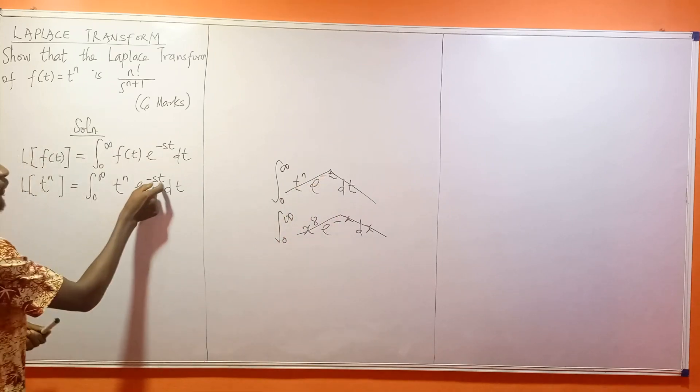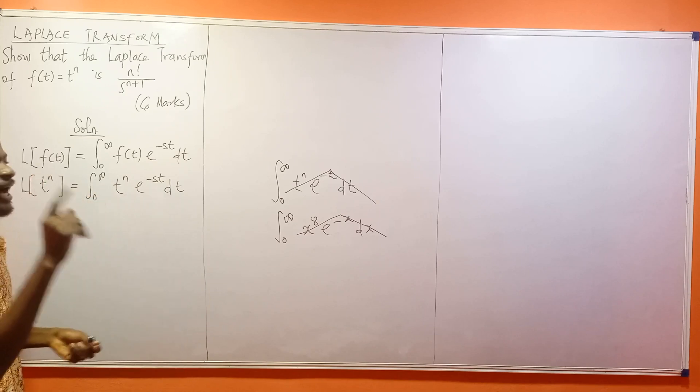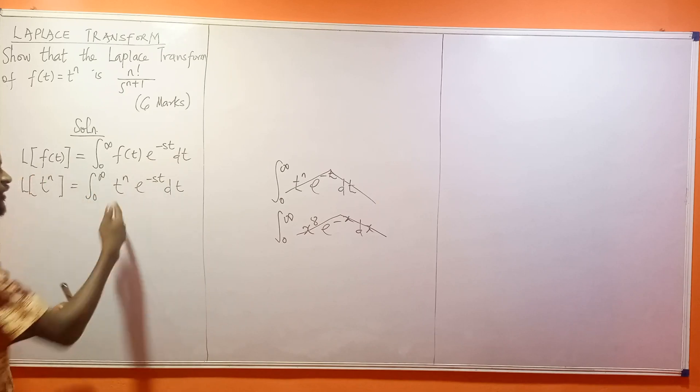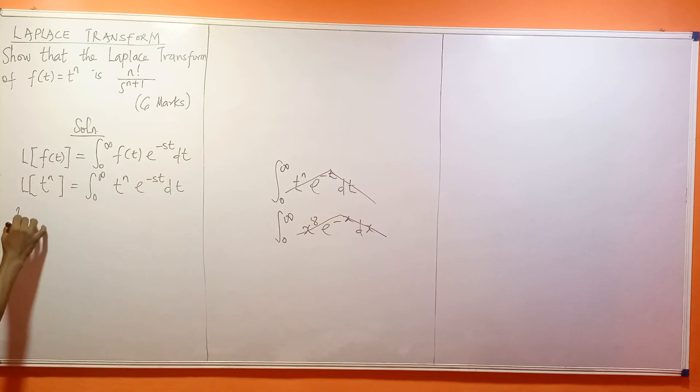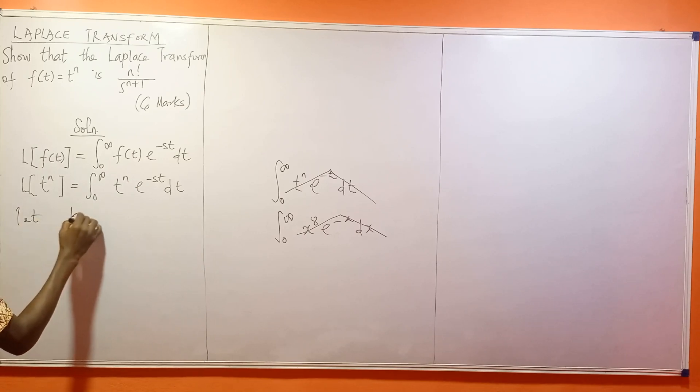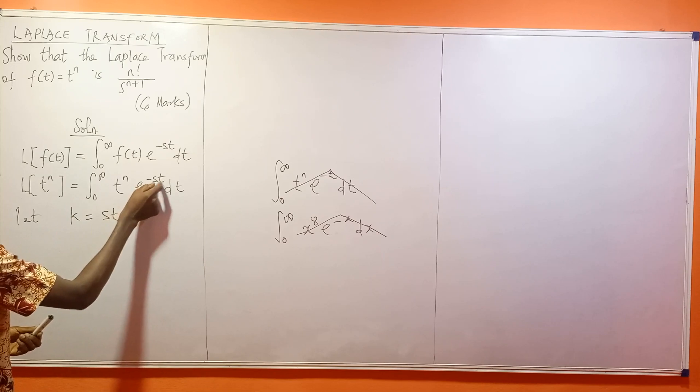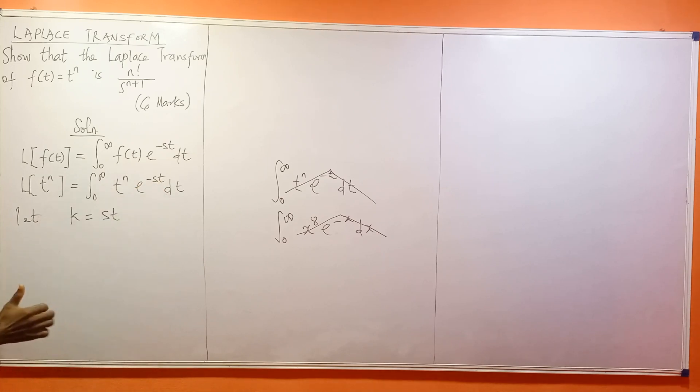To make st become a single variable, I'll use a substitution. Let k = st. Then I'll have e^(-k) instead of e^(-st).